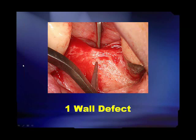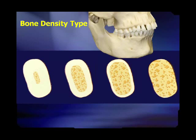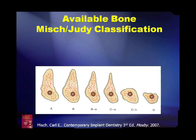What about one- and two-wall defects where we don't have a lot of bony walls? In the maxilla, the success of the procedures we're going to discuss really depends on the density of the bone. Bone density — D1 through D4 — is critical to know prior to doing ridge splitting, compression, or expansion. It's also important to know whether you have enough width and height of bone. We use the Misch-Judy classification: Division A is abundant bone, Division B is barely enough, Division C is compromised, and Division D is deficient.